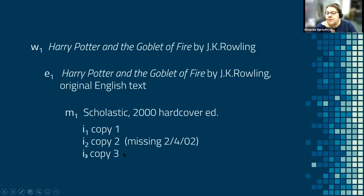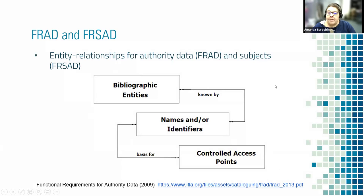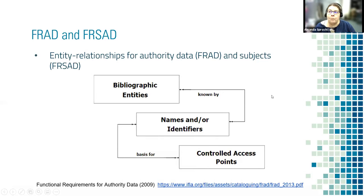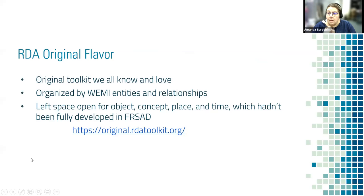We may have three copies in our library, one of which has been missing since February 2002 because someone took it out and never returned it. They also came up with models for authority data and subjects — these were not quite as fleshed out as FRBR was. They are also entity and relationship models for things like bibliographic entities. So people like authors or works are known by names — this work has the title Moby Dick — and we base our controlled access points on those.